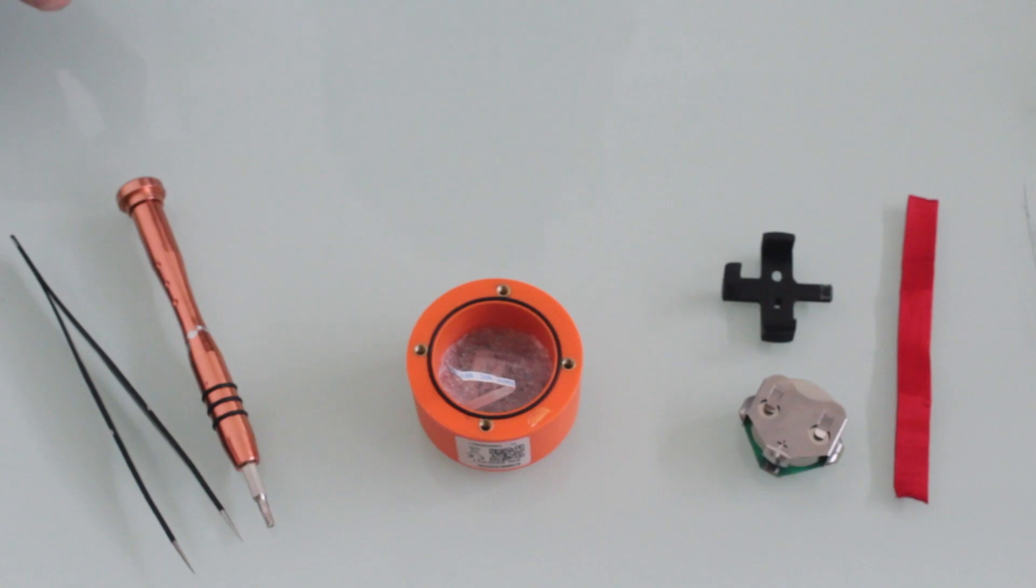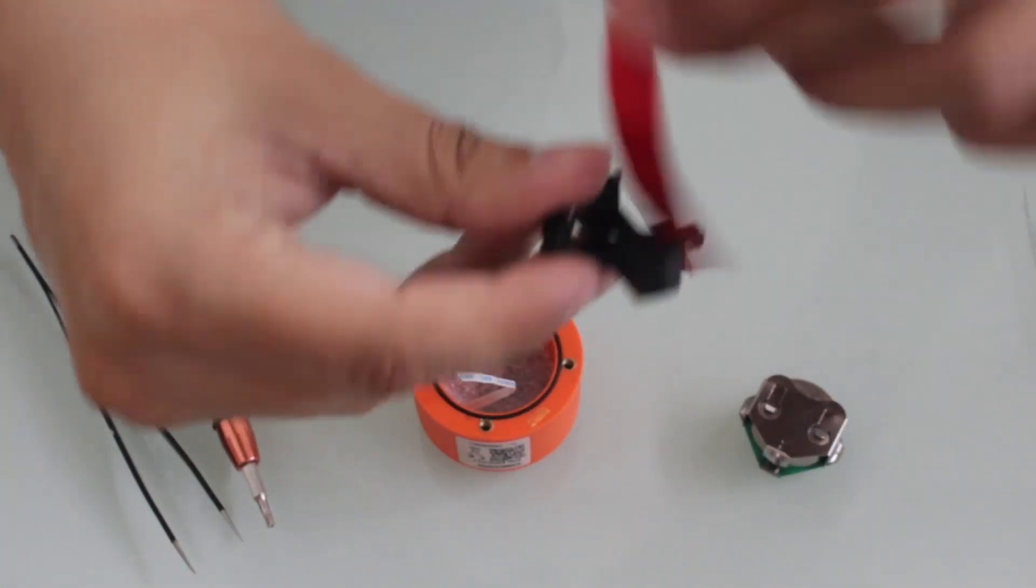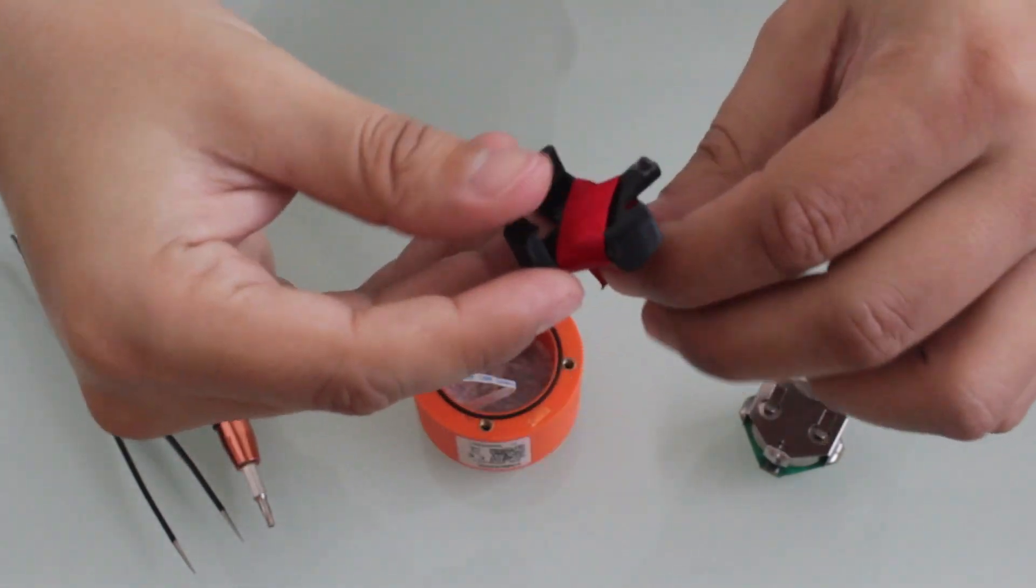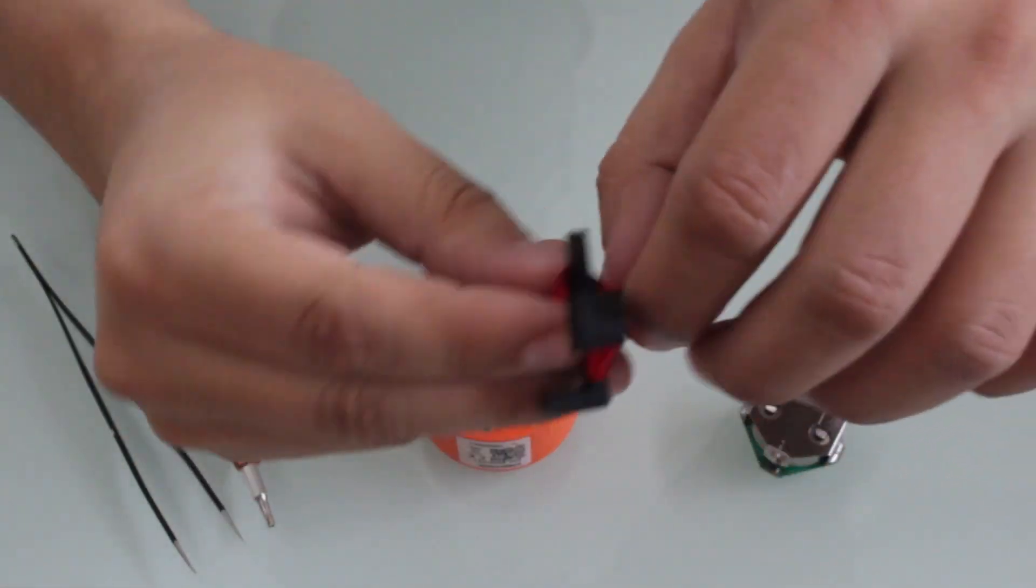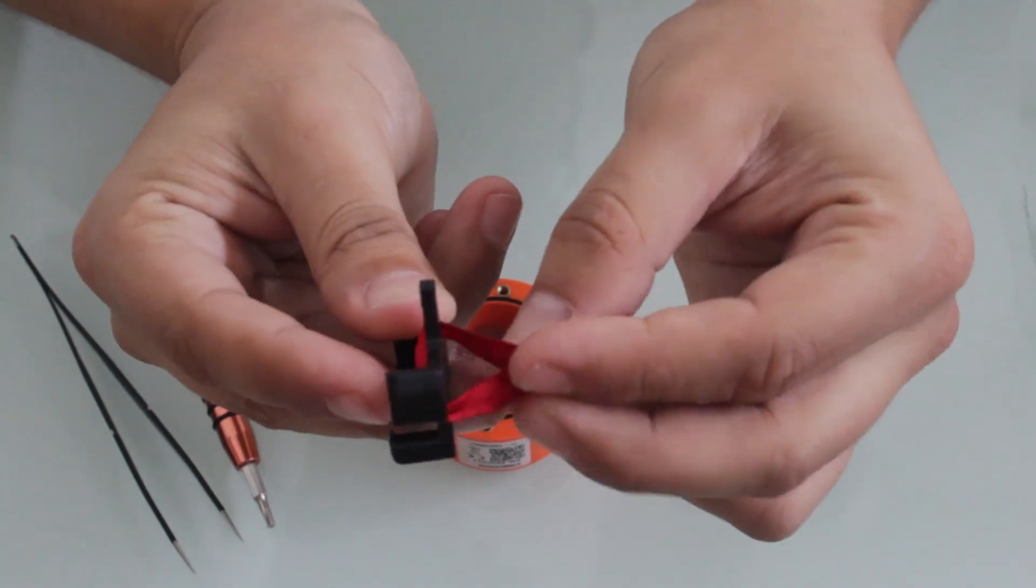Now we're going to attach the battery adapter. First we must cross the ribbon on the external bracket, like this. I'm going to make sure that the ends of the ribbon are at the same distance so it will be easier to use.